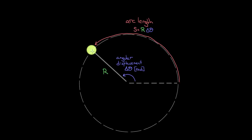If that seems miraculous, it really isn't. The reason this works so well is because this is how the radian was defined. One radian is defined to be the angle through which you have to travel so that the arc length equals the radius of that circle. This was selected and defined strategically so that we get a really easy way to convert between the angular displacement — how many radians something has rotated through — and how many meters it's actually traveled through its arc. The arc length has units of meters, as long as the radius is measured in meters.